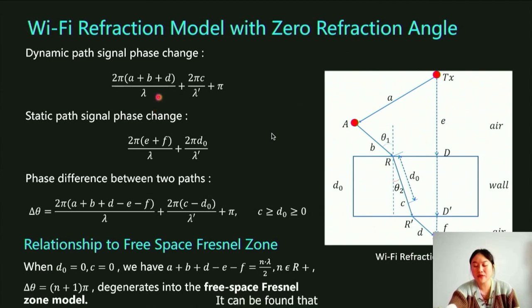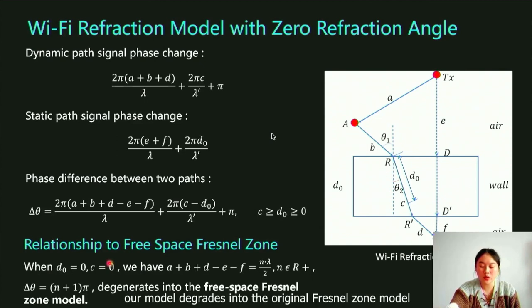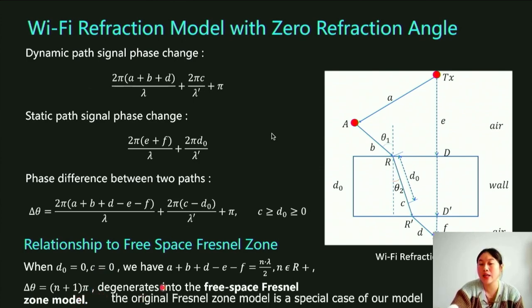It can be found that when the thickness of the wall is zero, our model degrades into the original Fresnel zone model. In other words, the original Fresnel zone model is a special case of our model.